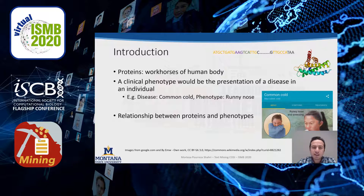Thousands of proteins work together to provide the functionality of cells. However, when a gene is mutated, a malfunction of a protein may occur that can lead to a genetic disorder. Variations of genes and proteins cause functional changes, and finding the effects of their mutations is necessary for understanding the resulting phenotype.